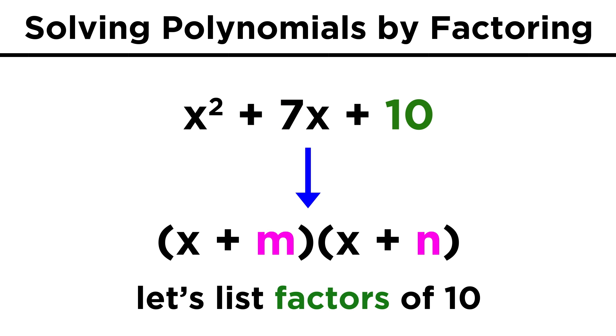So let's start by listing pairs of factors for ten. In this case there are very few options, plus or minus ten and one, and plus or minus five and two. Remember the product of two negatives is a positive, so negative factors are possible here.